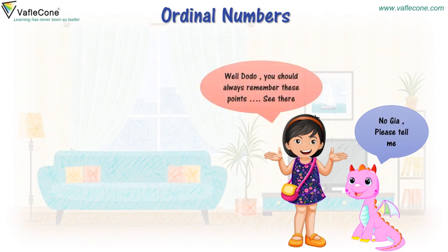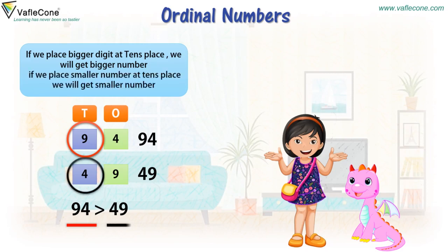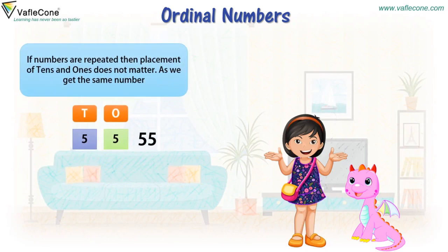Well, Dodo, you should always remember these points. See there — if we place a bigger digit at the tens place, we will get a bigger number. And if we place a smaller digit at the tens place, we will get a smaller number. If digits are repeated, then placement of tens and ones doesn't matter as we get the same number.